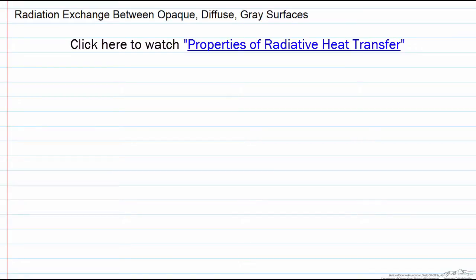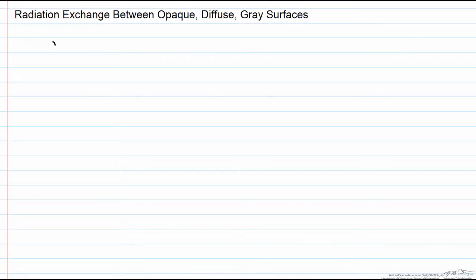In a previous screencast we showed that the net radiative heat transfer from or to an opaque diffuse gray surface Q sub i is equal to the area of that surface J sub i minus G sub i.